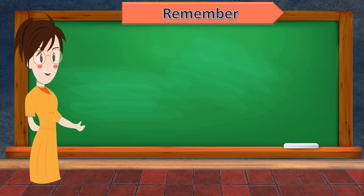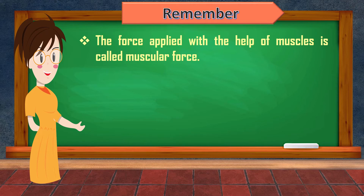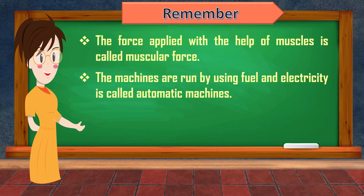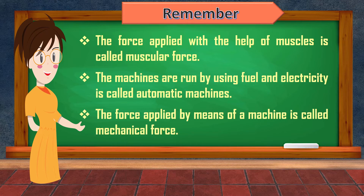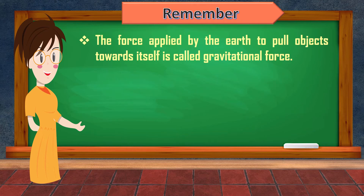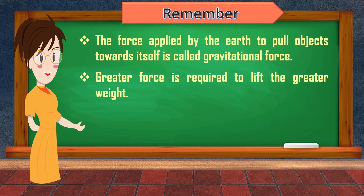Note these important points which we covered in our last class. The force applied with the help of muscles is called muscular force. Machines run by using fuel and electricity are called automatic machines. The force applied by means of a machine is called mechanical force. The force applied by the earth to pull objects towards itself is called gravitational force. Greater force is required to lift greater weight.